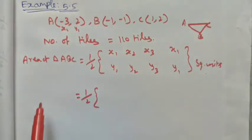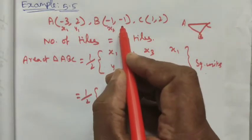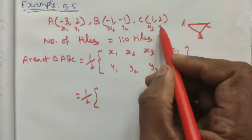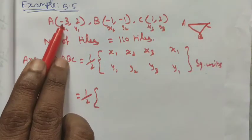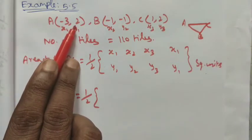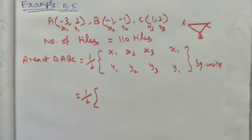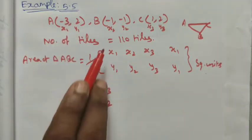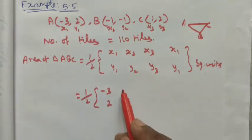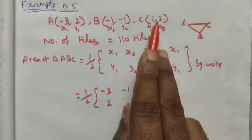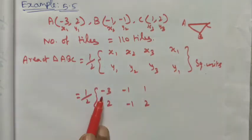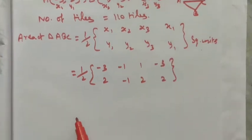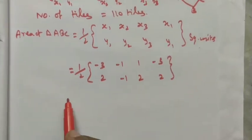Now apply the values. Take x1, y1 as the first point, x2, y2 as the second point, and x3, y3 as the third point — x is always the x-coordinate and y is always the y-coordinate. So (x1, y1) = (-3, 2), (x2, y2) = (-1, -1), (x3, y3) = (1, 2), and again the first point (-3, 2). Now multiply this term.